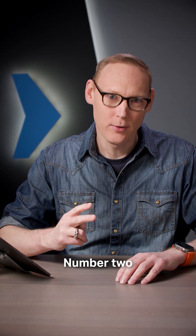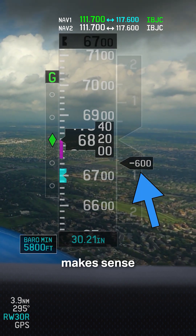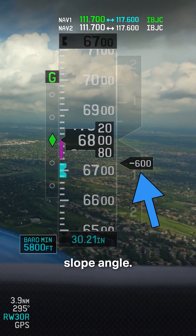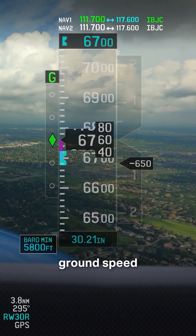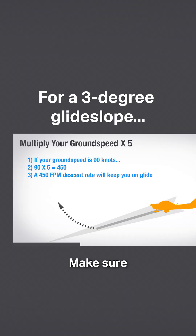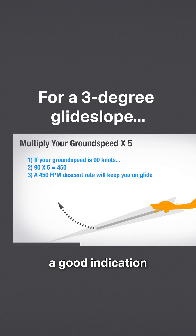Number two: I'm going to make sure my descent rate makes sense considering the glide slope angle. Essentially, take your ground speed, compute your descent rate at that glide path angle, make sure that matches what you're actually flying, and that'll give you a good indication that you're on the correct glide slope.